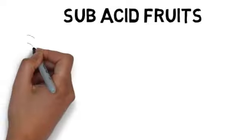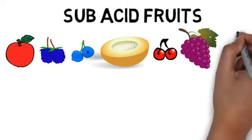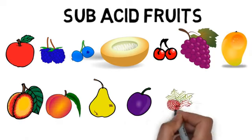Sub-acid fruits are the next best. Apples, blackberries, blueberries, cantaloupe, cherries, grapes, mangoes, nectarines, peaches, pears, plums, raspberries, and watermelon make up this group.